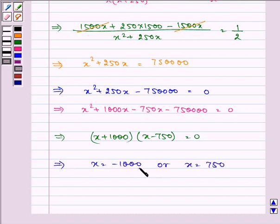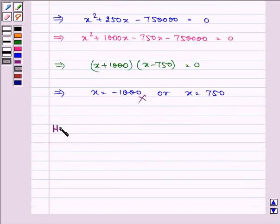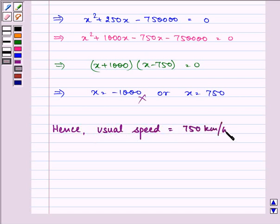Since speed cannot be negative, hence the usual speed is equal to 750 km per hour.